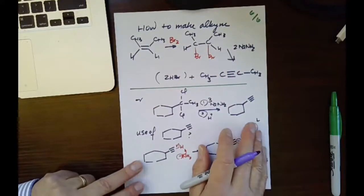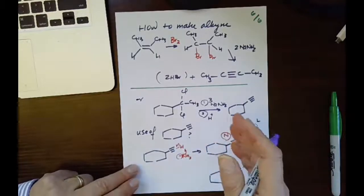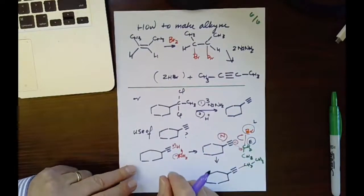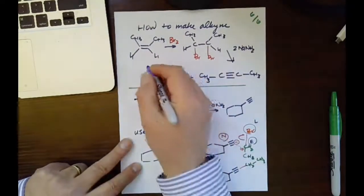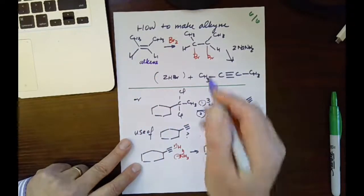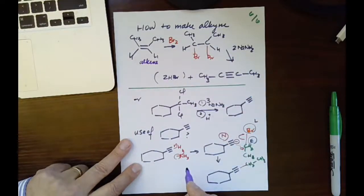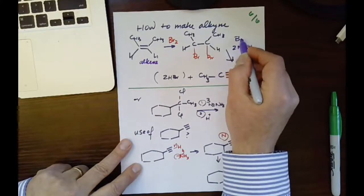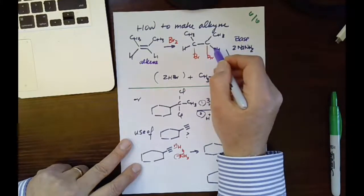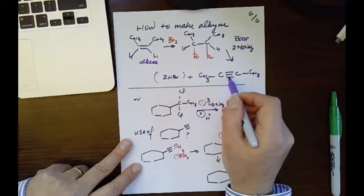And then we talk about how to make alkyne. I haven't talked about—I'm sorry, we are going to talk about this. So if I add bromine to an alkene, I make a dibromo compound. Now if I add a strong base, I can remove H and a Br, H and a Br, to make a triple bond.